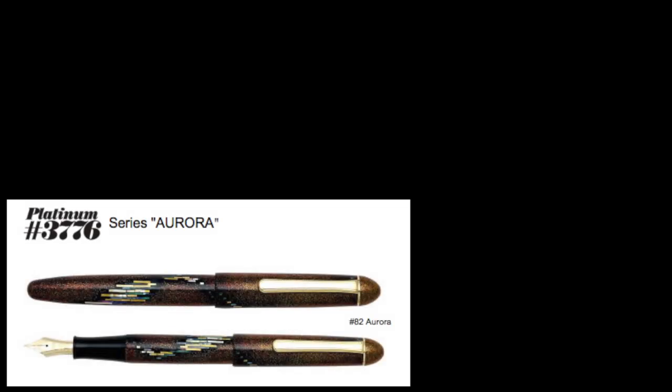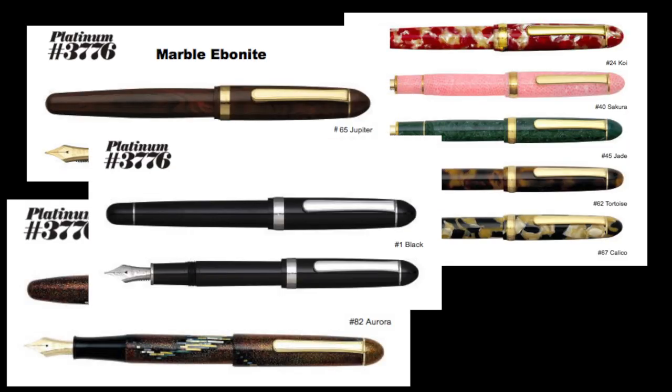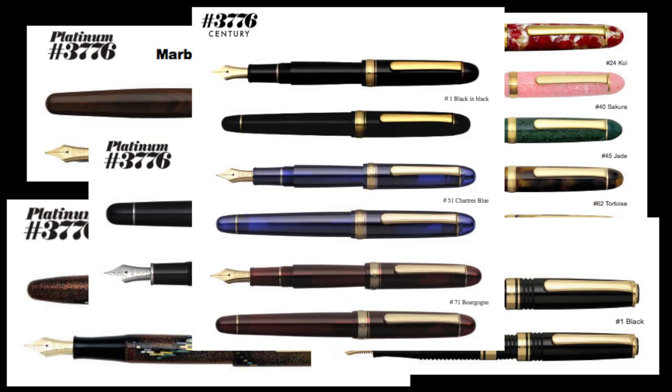The 3776 is available in a variety of materials and designs, including but not limited to Maccier, Celluloid, Ebonite, the Balance Series, Gathered, and the Century Series.